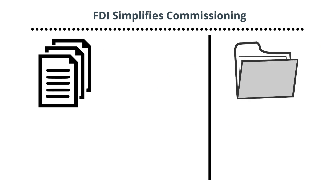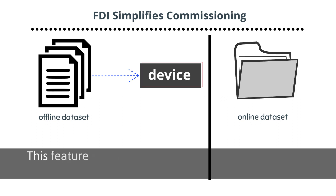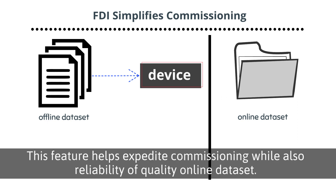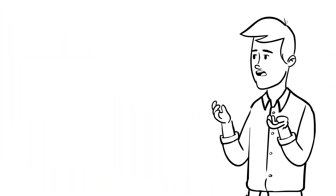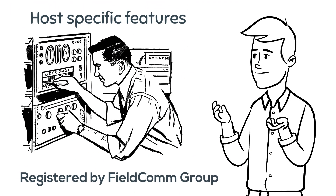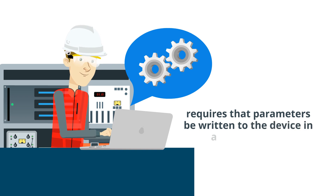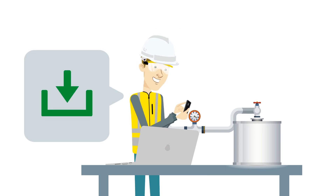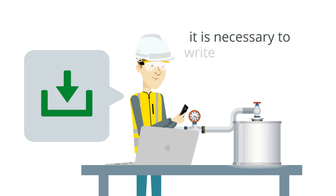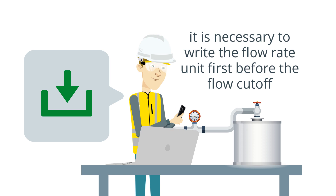During the commissioning phase, FDI uses two separate datasets: an offline dataset and an online dataset. Additionally, standardized practices for transferring the offline dataset to the device are defined. This feature helps expedite commissioning while also improving the reliability of the online dataset. These practices are host-specific features, so make sure that your host is registered by Fieldcom Group. For example, committing a configuration to a device sometimes requires that parameters be written to the device in a specific order. Using a flow meter as an example, while downloading flow cutoff and flow rate units from the offline dataset to the device dataset, it is necessary to write the flow rate unit first before the flow cutoff. If written in reverse order, the unit may not be accepted by the device if the cutoff value is out of range.